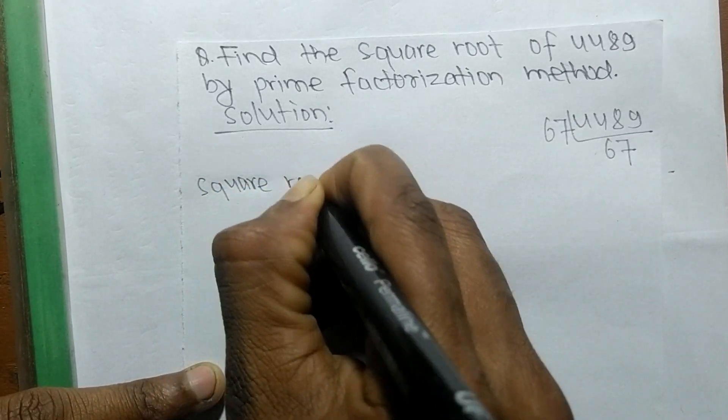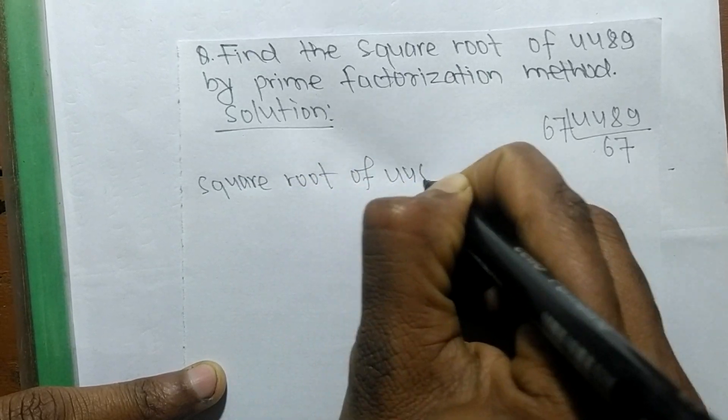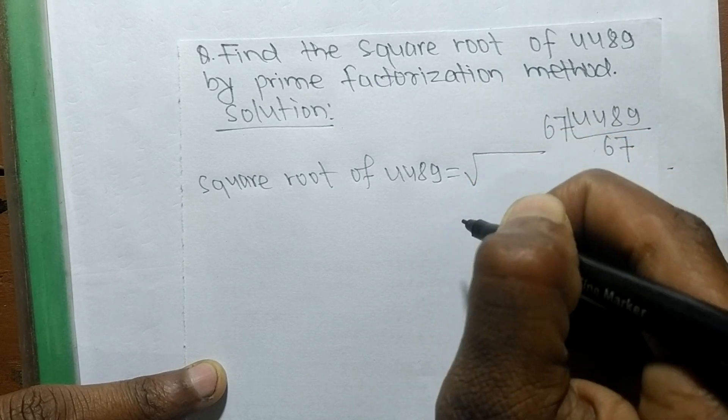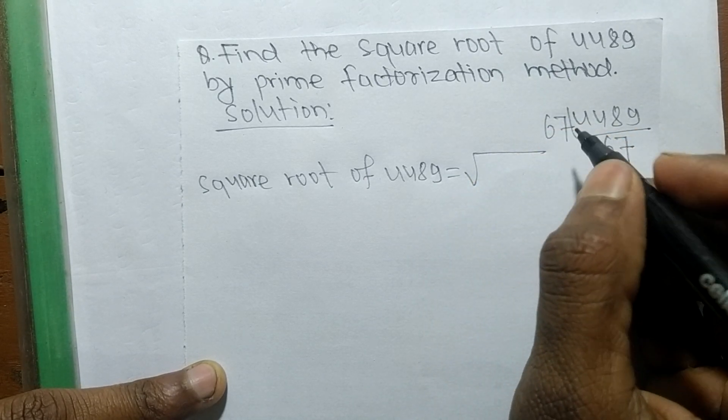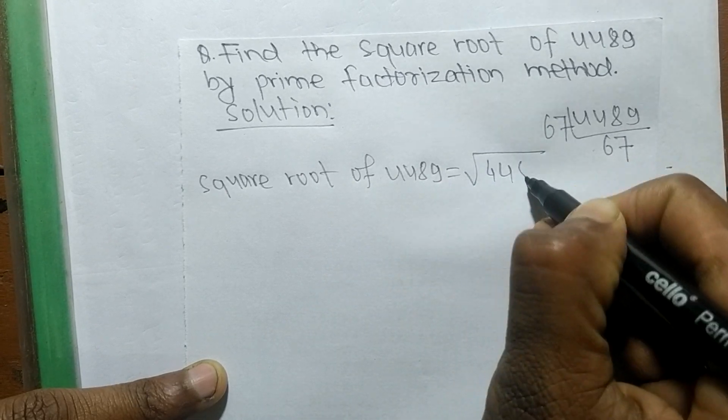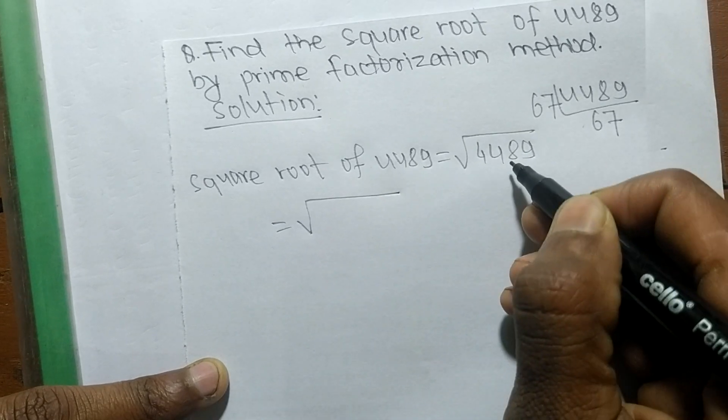A square root of 4489 is equal to - this sign is the sign of a square root - and we are finding the square root of 4489. So now we write the prime factors of 4489.